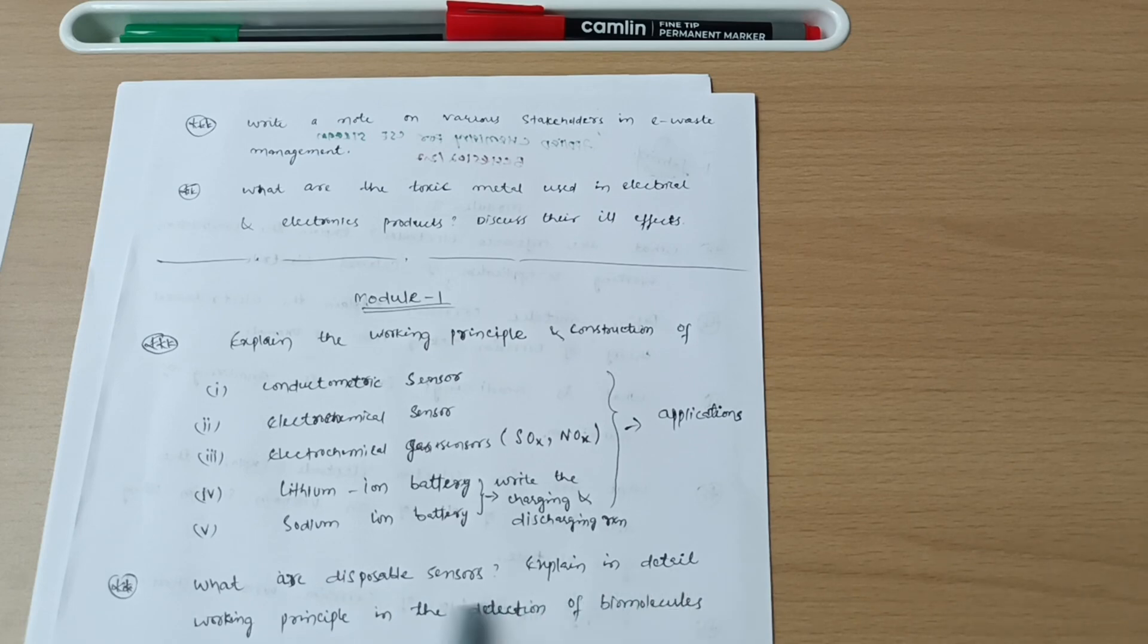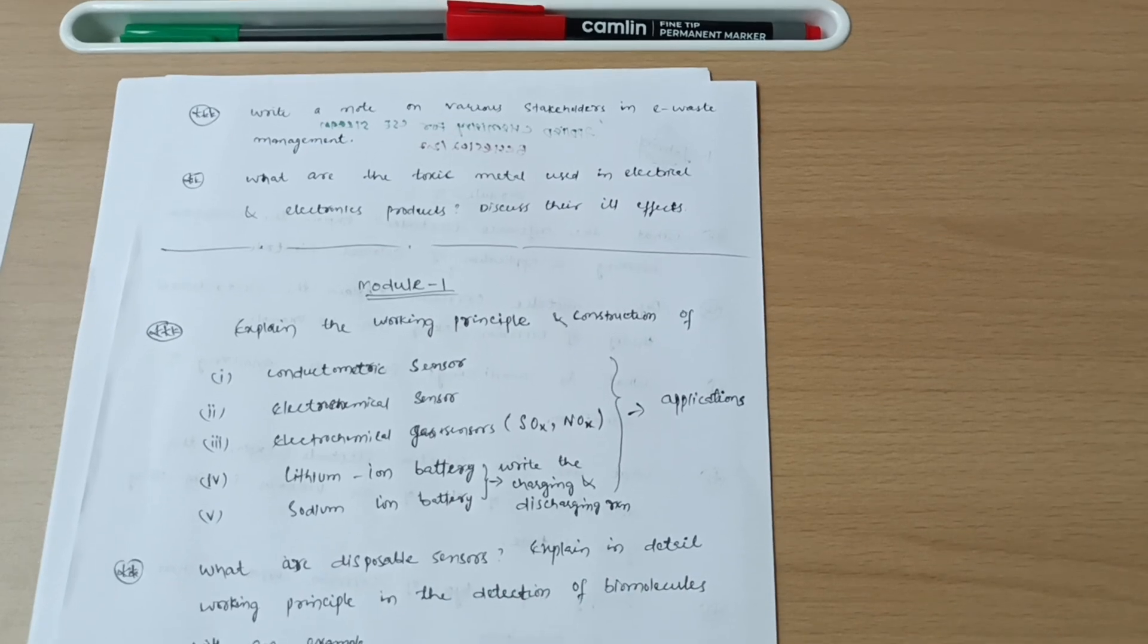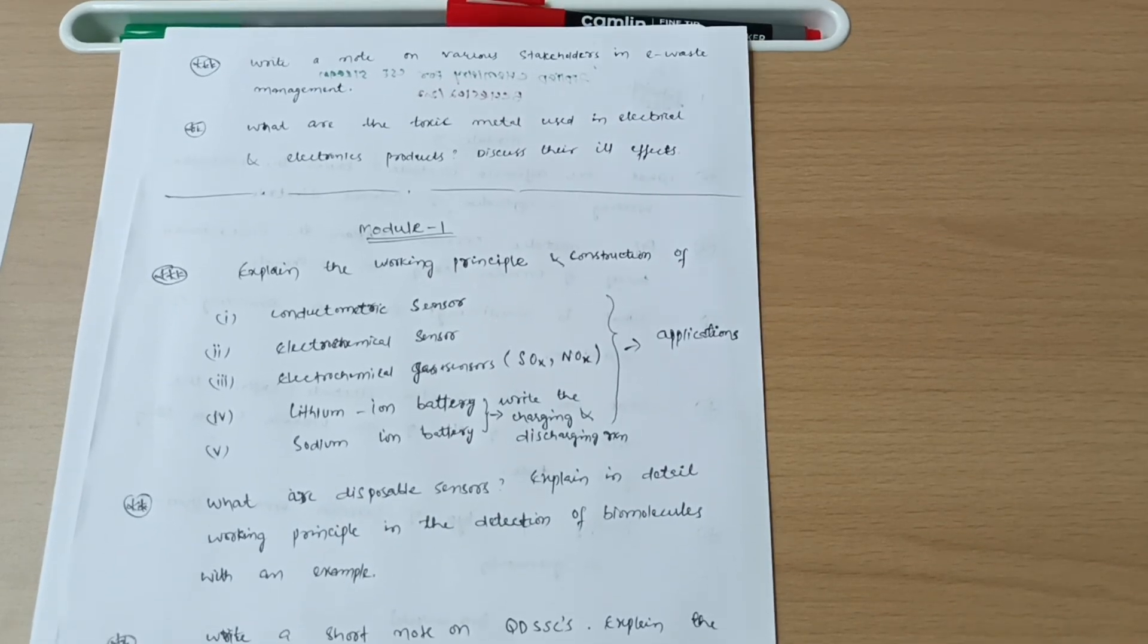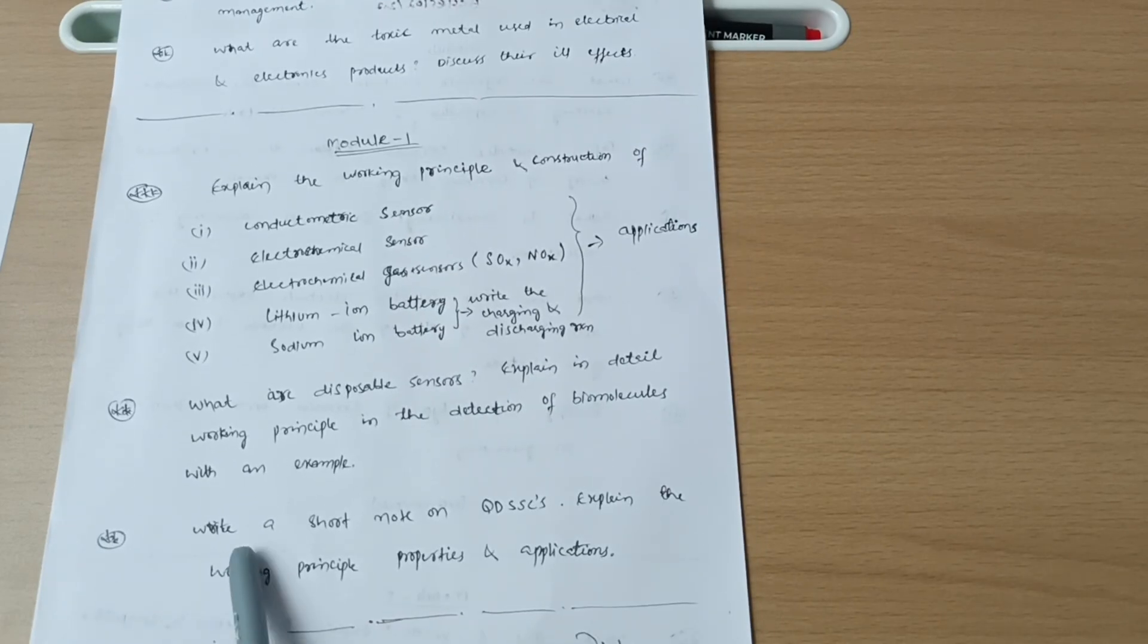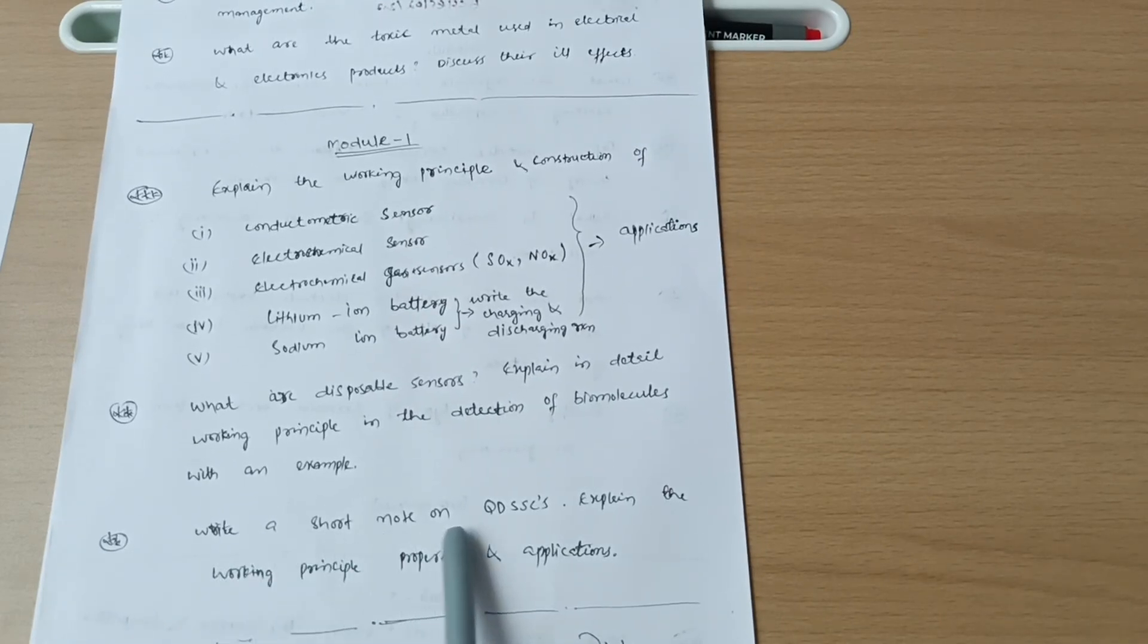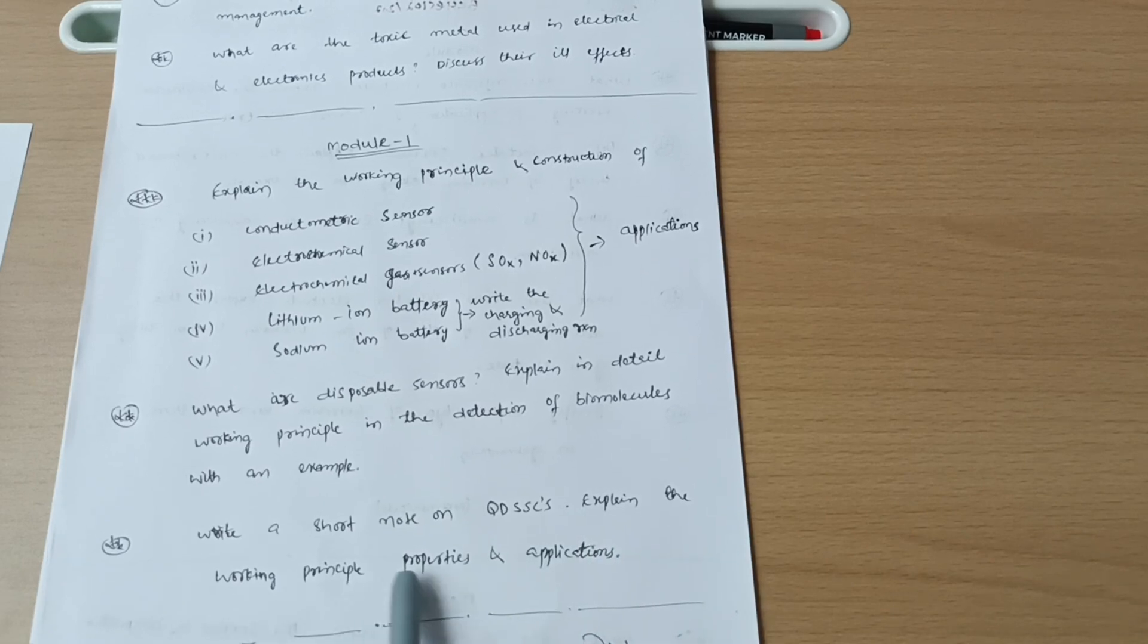Next is what are disposable sensors? Explain in detail working principle in the detection of biomolecules with an example. Last question from module first, write a short note on QDSSCs and explain the working principle, properties, and applications. So this is all about module first.